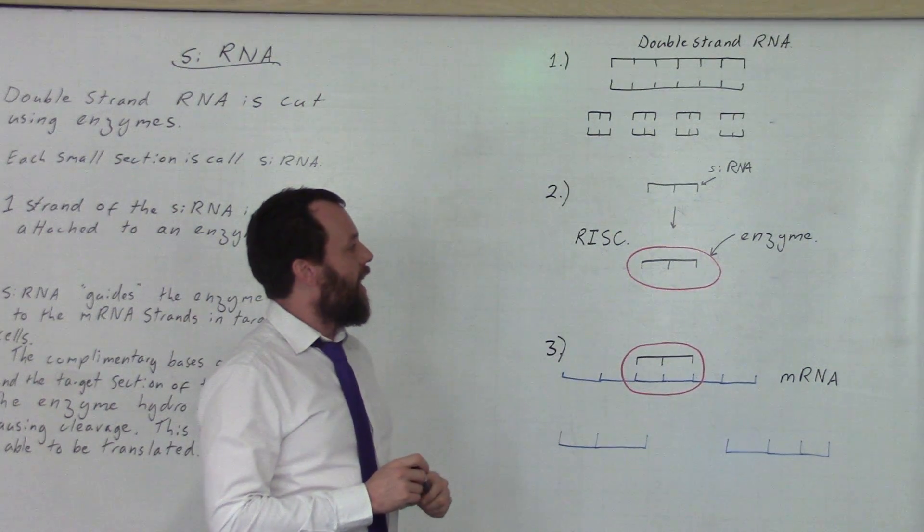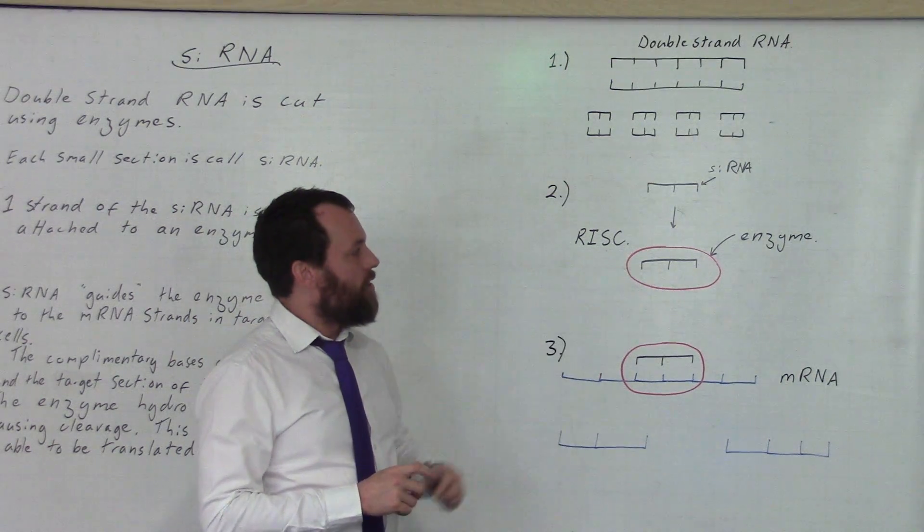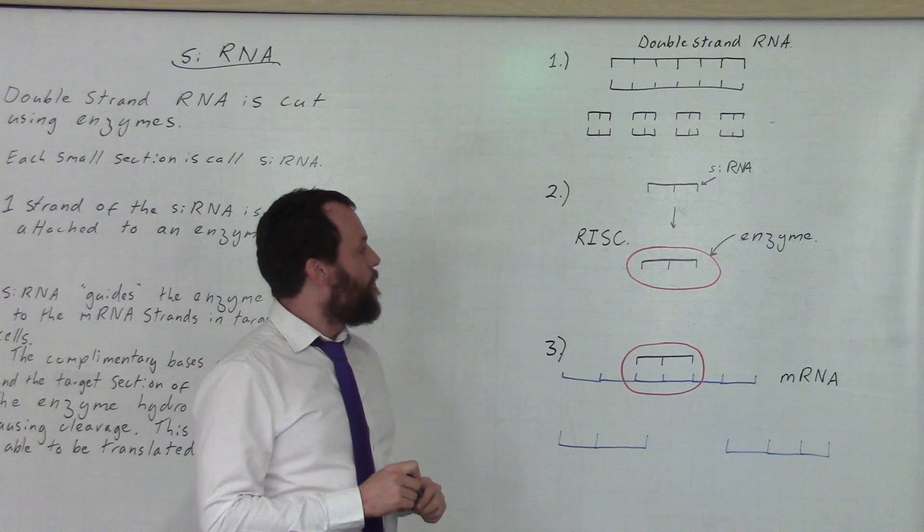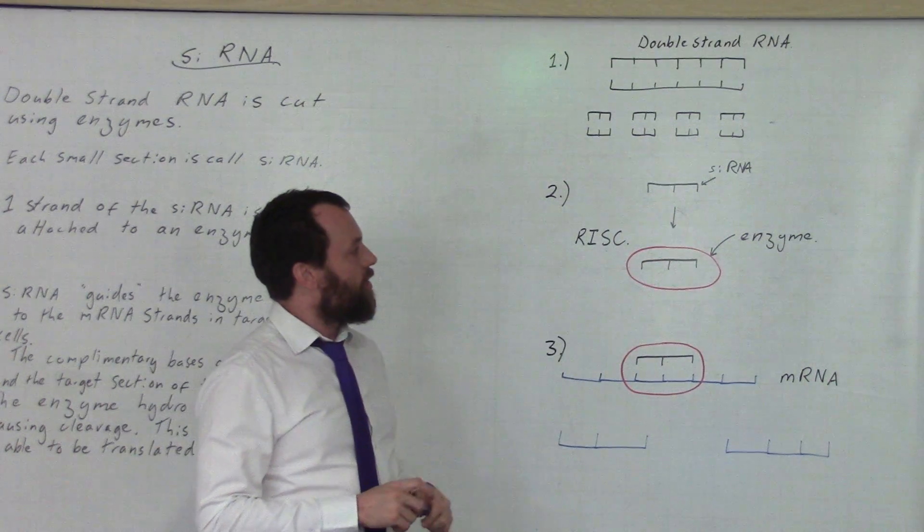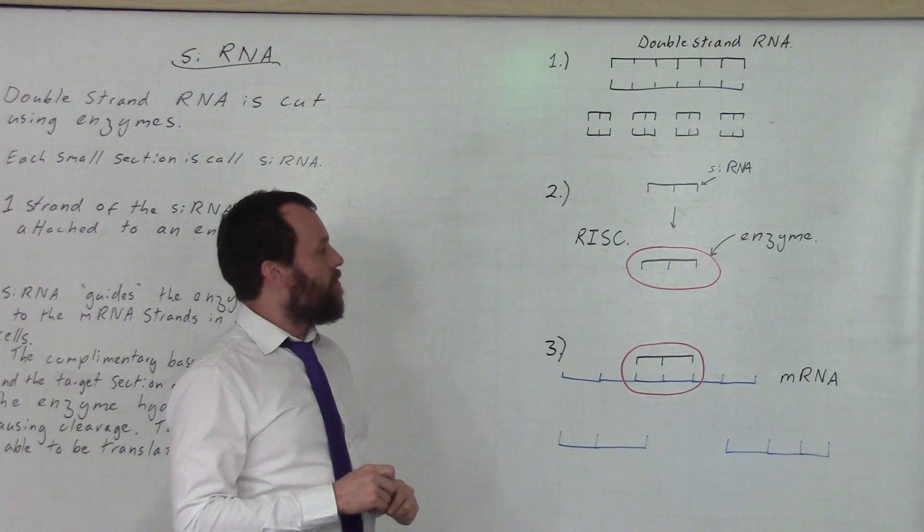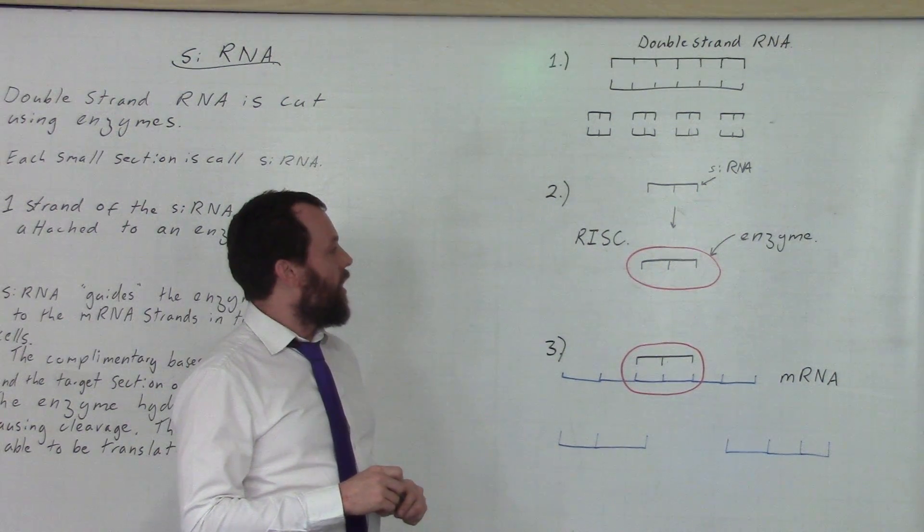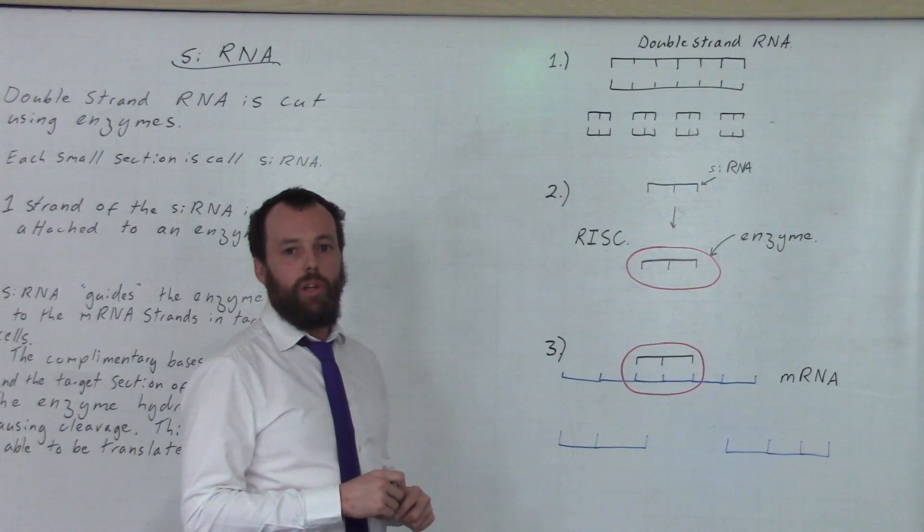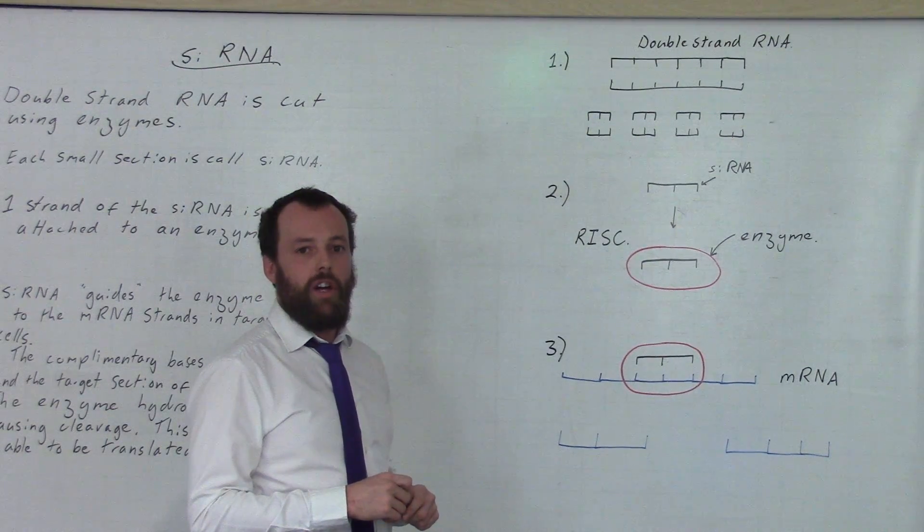The siRNA is then attached to an enzyme. The enzyme is called a DICER, but that's extra knowledge. This whole complex, the siRNA and the DICER, the enzyme, is known as a RISC. This being RNA-induced silencing complex. Again, that's extra knowledge off spec that you can use in a unit 5SA.